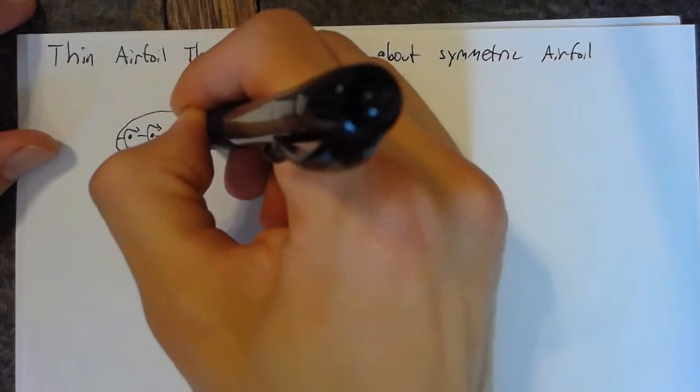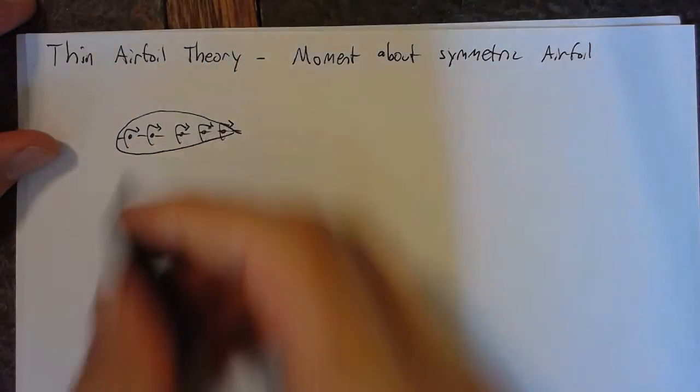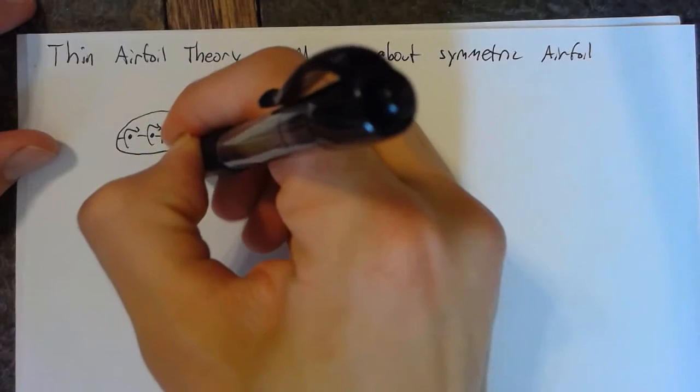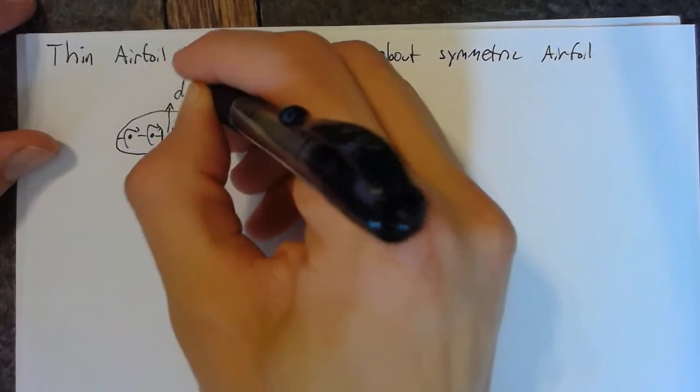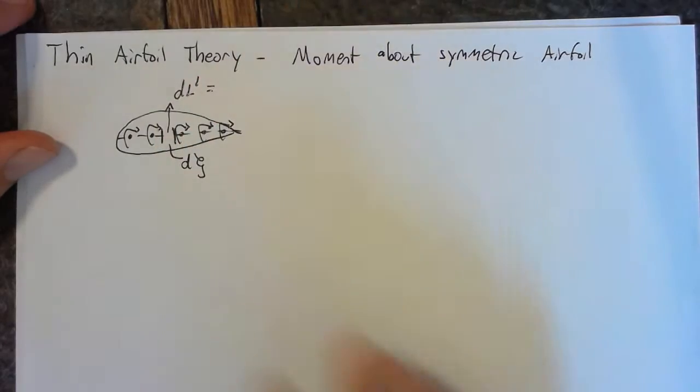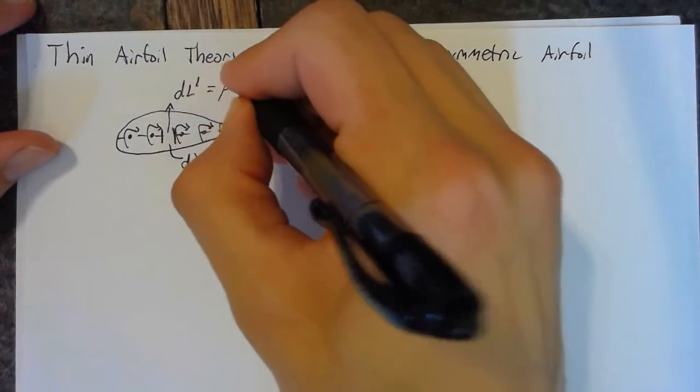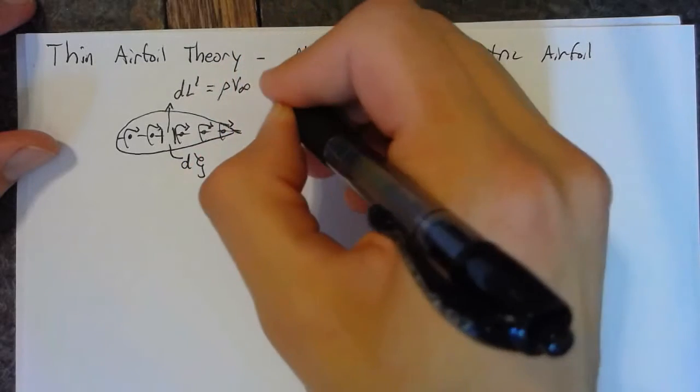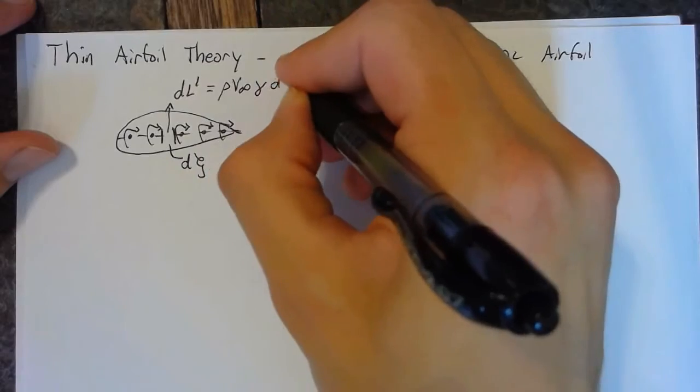which means there's some distributed vorticity along the chord line. Each element of this vorticity is going to be causing some differential lift, which is equal to ρV∞ γ dξ.